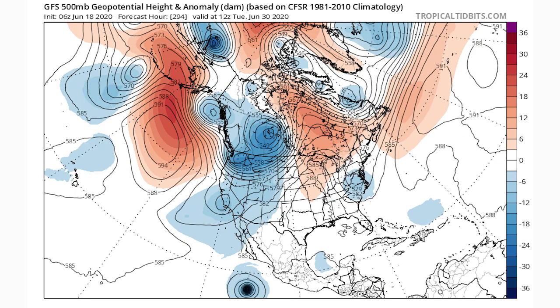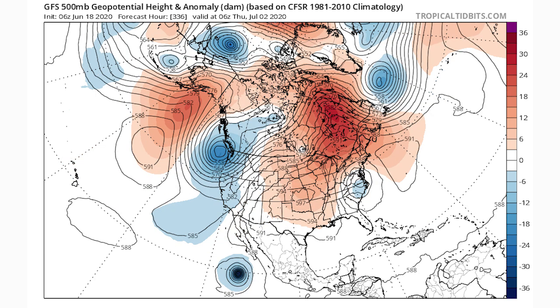By about June 30th, we fully enter a negative PNA pattern — some reds show up for the central and eastern United States. By July 2nd, those reds are widespread throughout the central and northeastern United States. One thing to mention is that the southeast is still trending toward below average temperatures, and I know a lot of people from the deep south actually want that because it gets so hot there, so hopefully those temperatures stay a little bit negative.